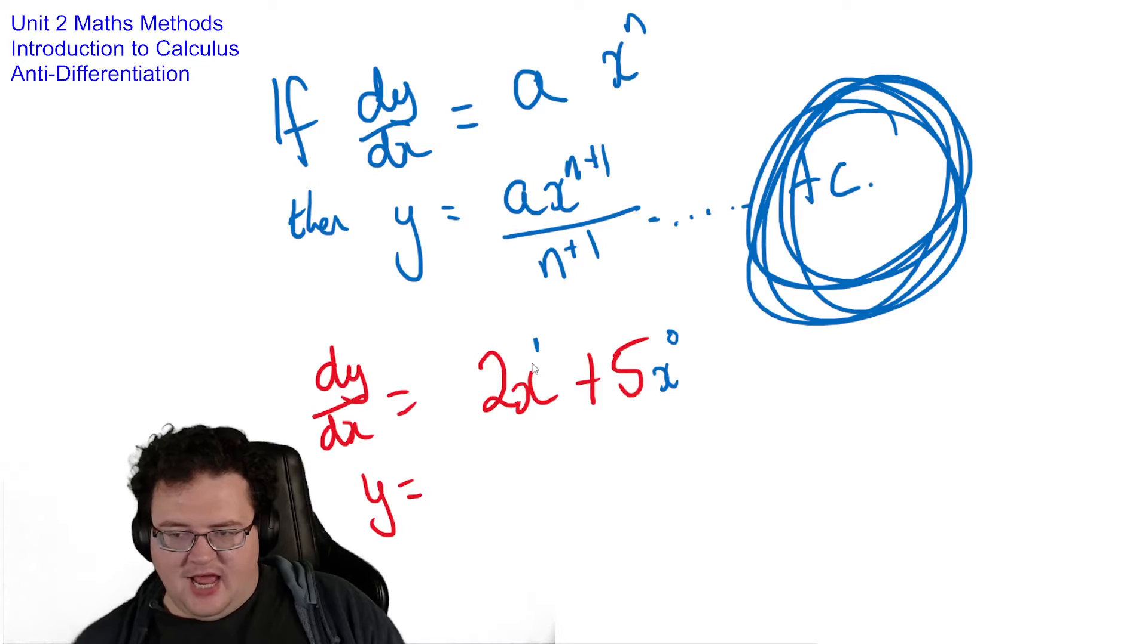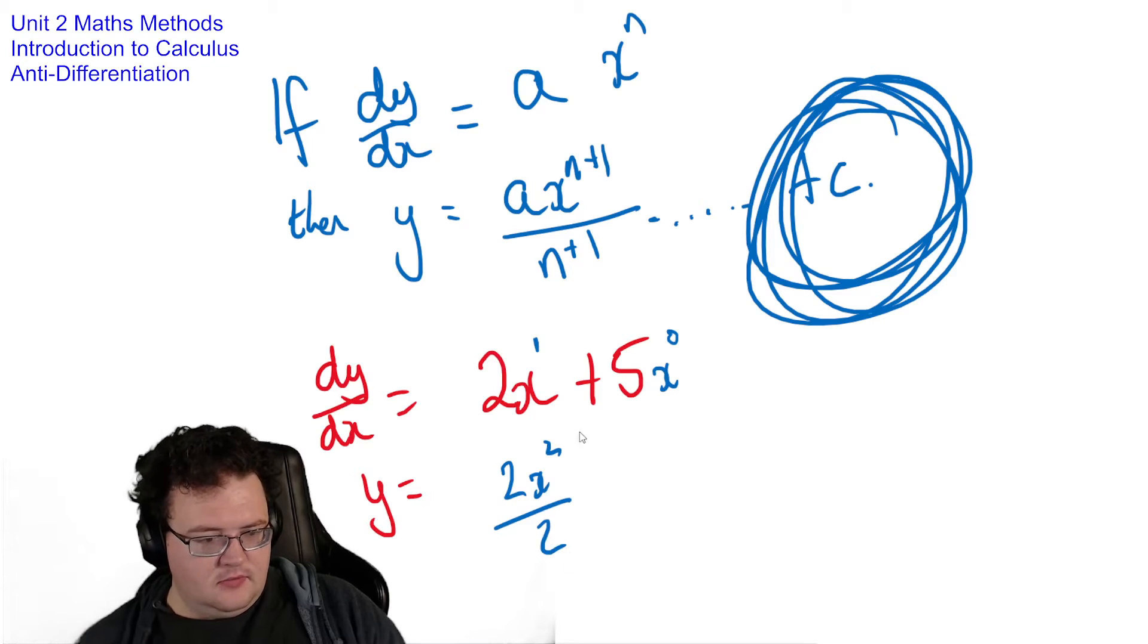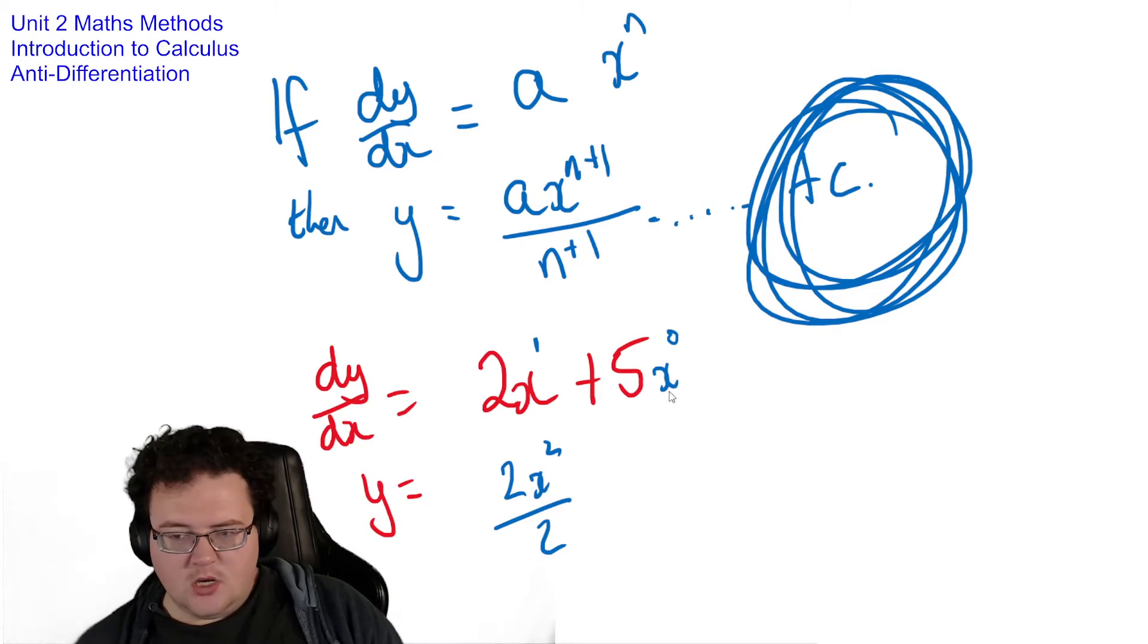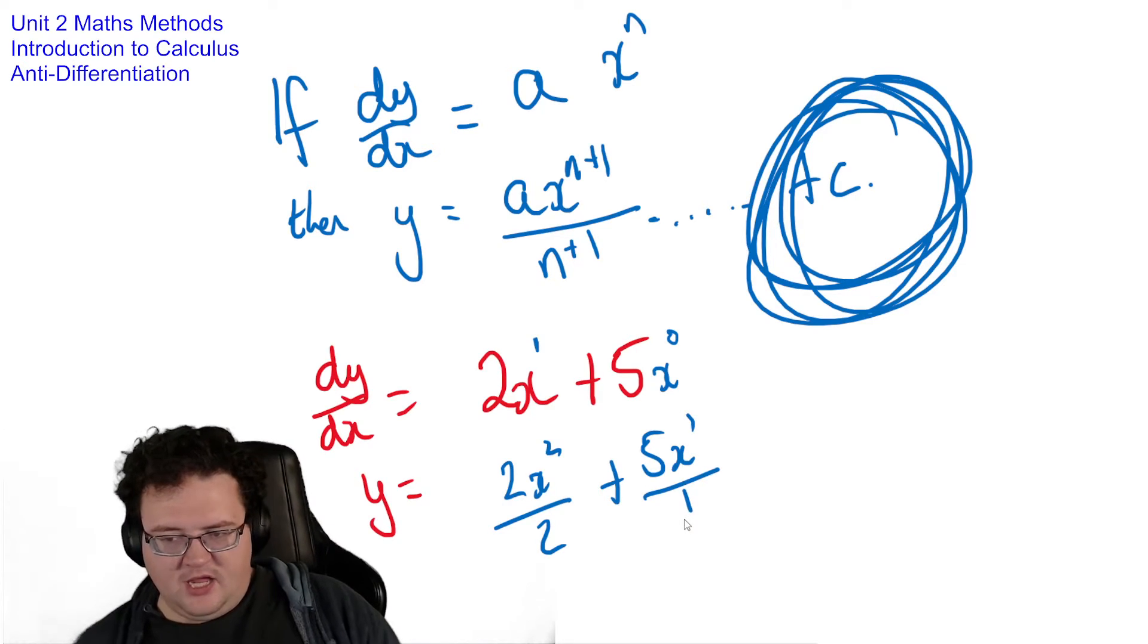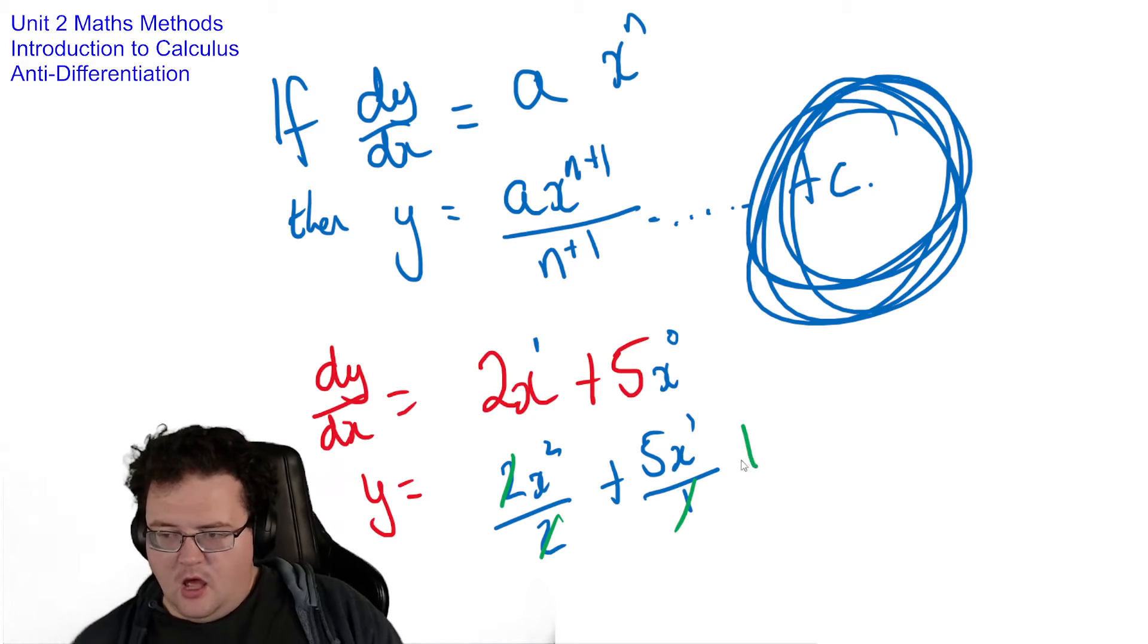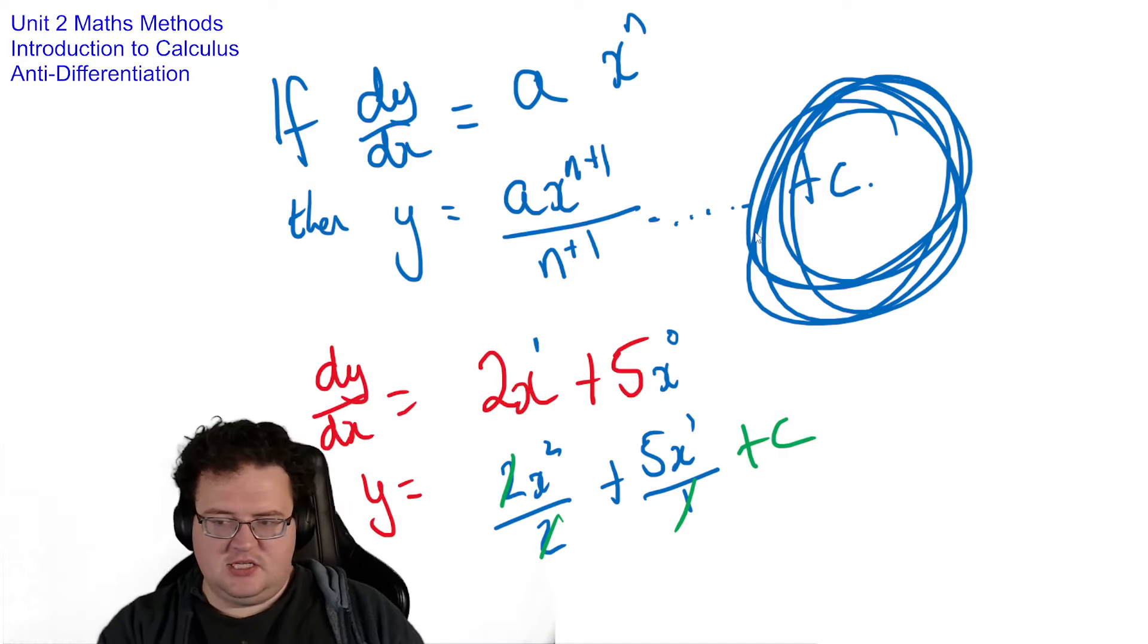Alright, so I'm going to add 1 to the power. So that's going to make it x squared. And then divide by the new power. I'm going to add 1 to the power, divide by the new power. And now I'm going to cancel down. Cancel, cancel. 5 over 1, don't need that. And then I'm going to put my plus c on there.